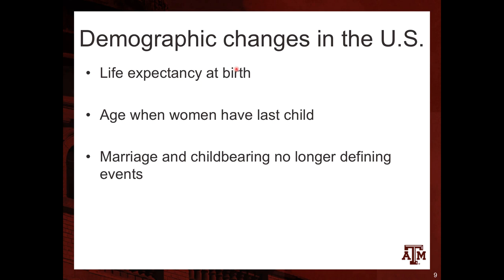Some major demographic changes have been experienced in the US in recent decades. Three main topics we can highlight in terms of demographic changes are: life expectancy at birth, the age when women have their last child, and the fact that marriage and childbearing are no longer defining events in people's lives.